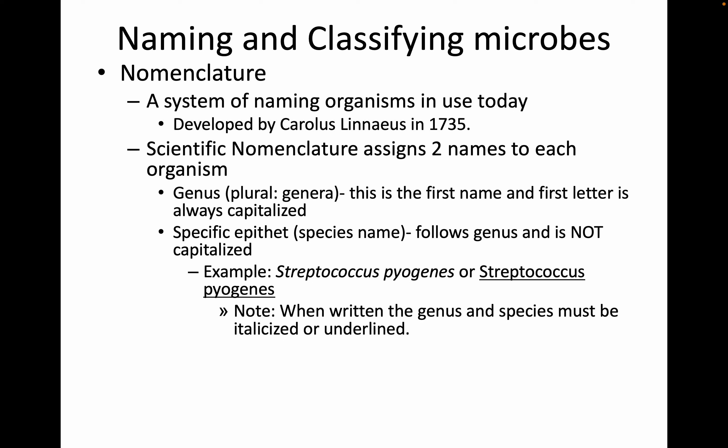There are very specific ways that scientific names are written. The specific epithet — the species name — follows the genus and is not capitalized. For example, Streptococcus pyogenes is written correctly with a capitalized genus, lowercase species, and is italicized. You could also write it correctly underlined instead of italicized, which is especially important when handwriting since italics are hard to do by hand.